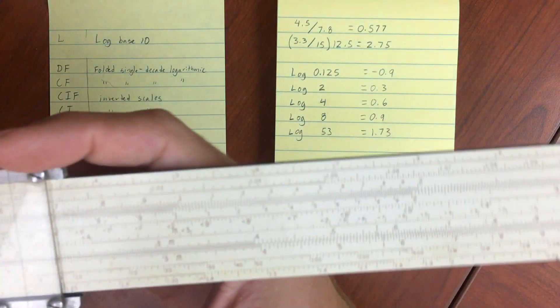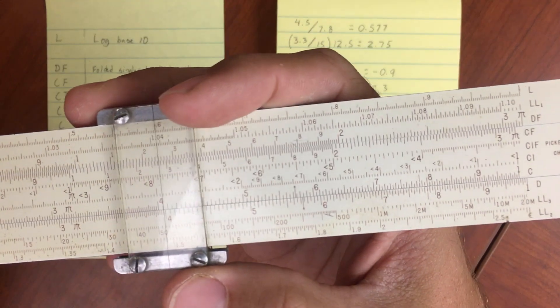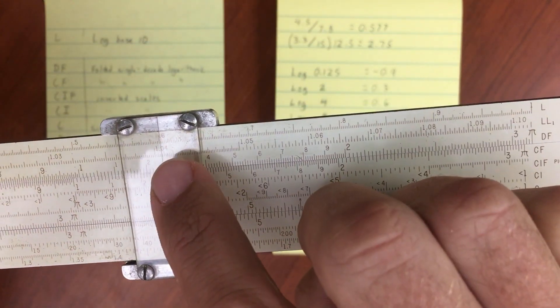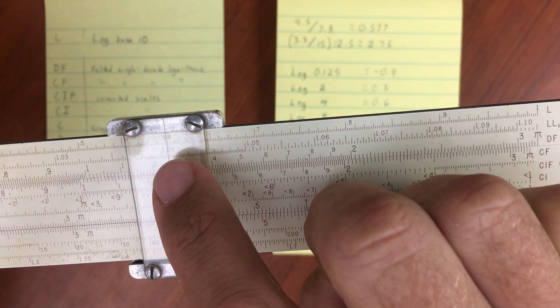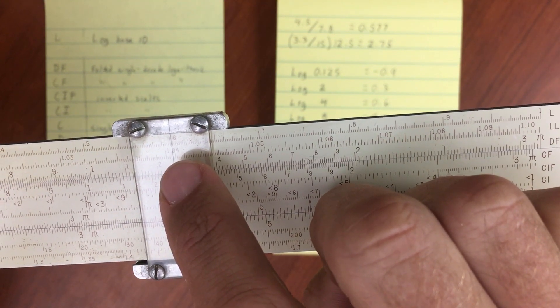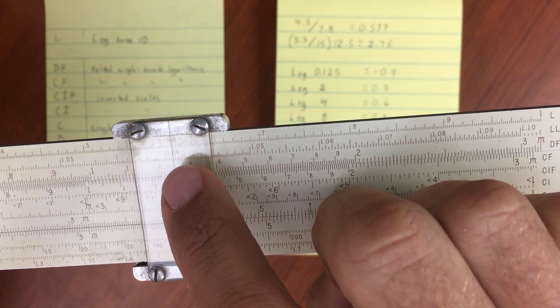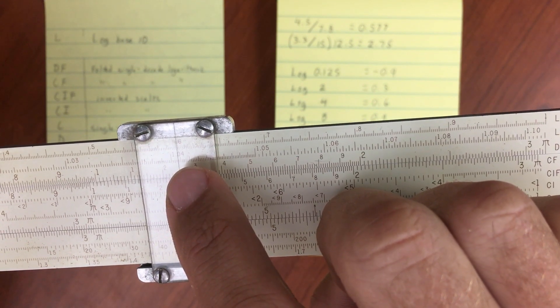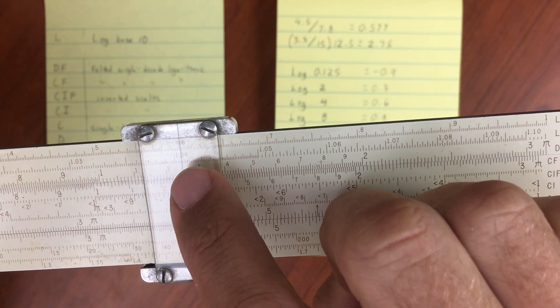If I do four, move over to four here on my D scale, read off the log scale, I'm just about point six, a little under point six zero one, or a little bit under point six zero two.